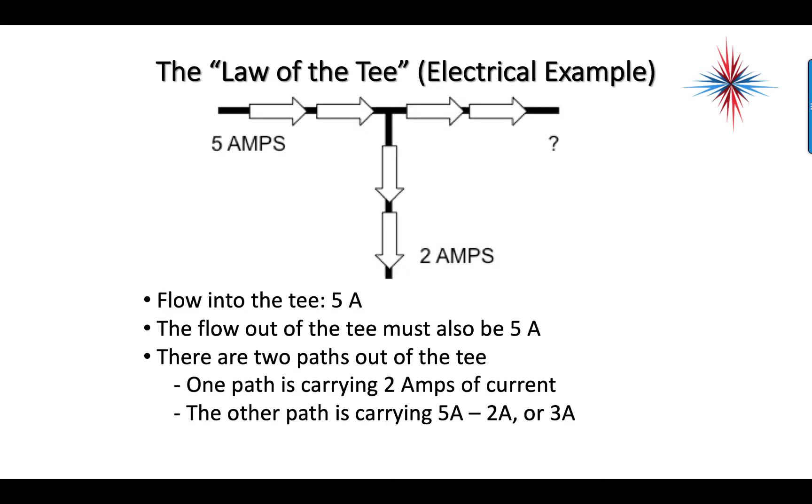We're going to take another example - we have an electrical tee. I have five amps coming in, we have two amps going to some device down at the bottom. The flow in is five amps, the flow out of the tee total must be five amps. So one path is carrying two amps, so the other path has to be three amps. We don't miraculously gain or lose current in just a simple tee.